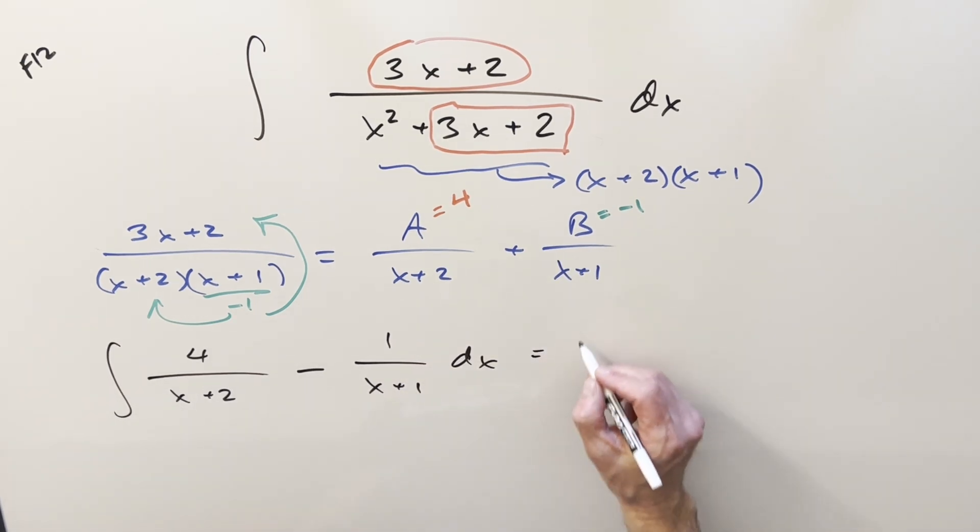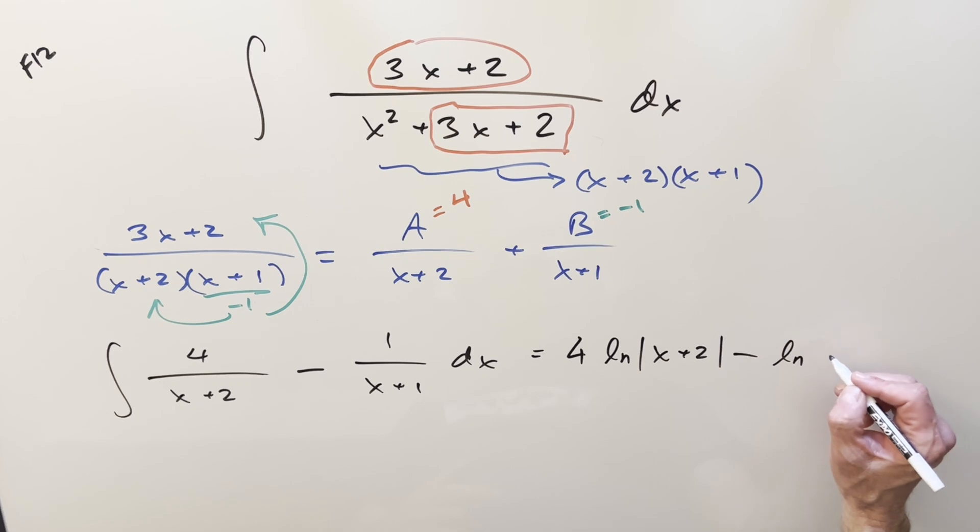Go ahead and integrate. What's going to happen? Here, this is going to become natural log absolute value x plus 2 minus integral in this one, natural log absolute value x plus 1. You could use log properties, bring this into the exponent, but I think I'm just going to leave it and finish it like this.